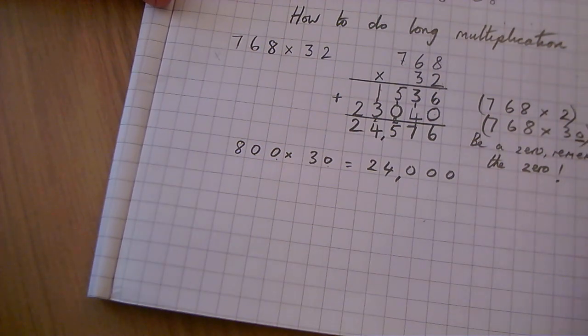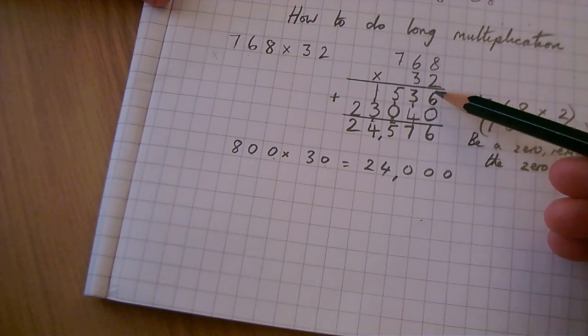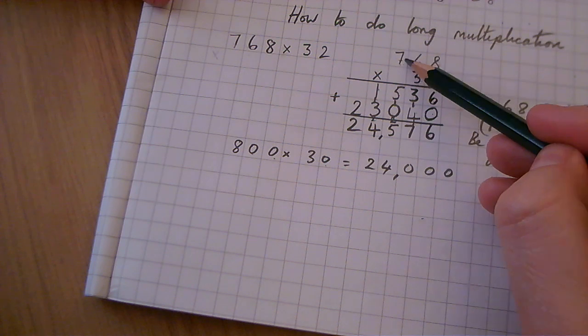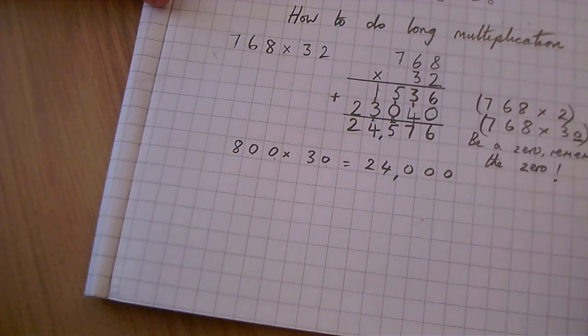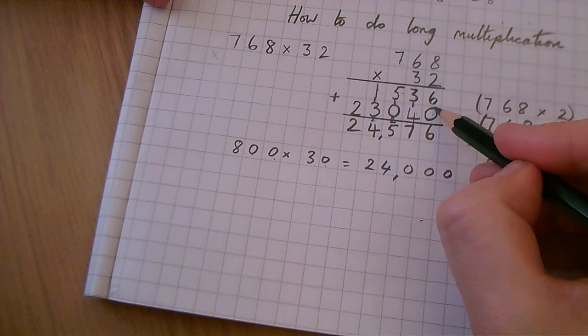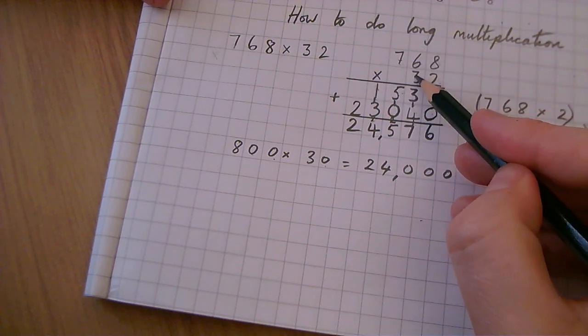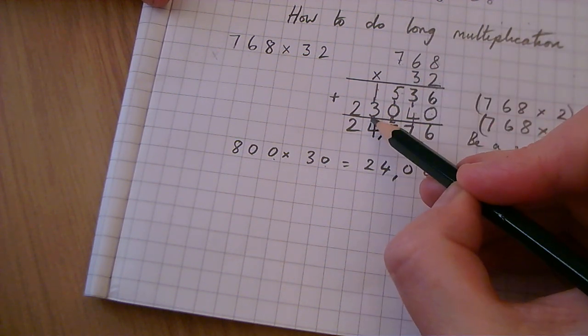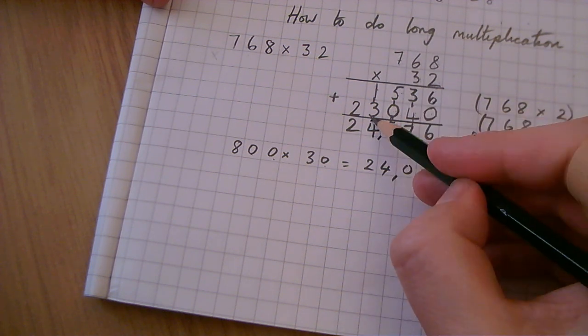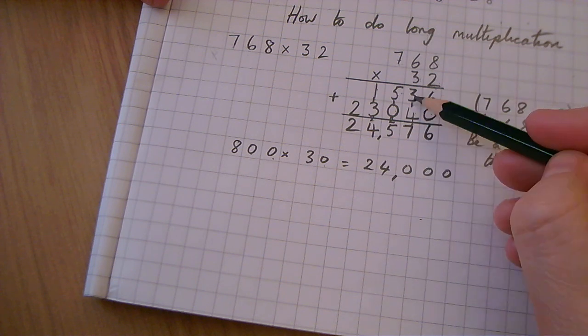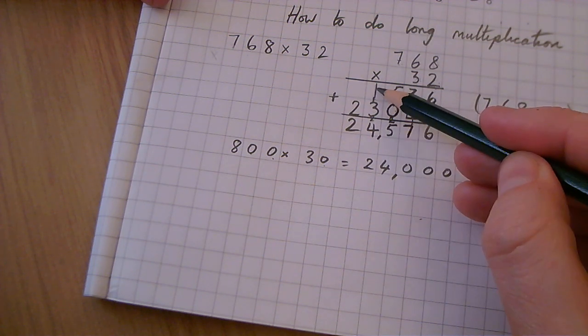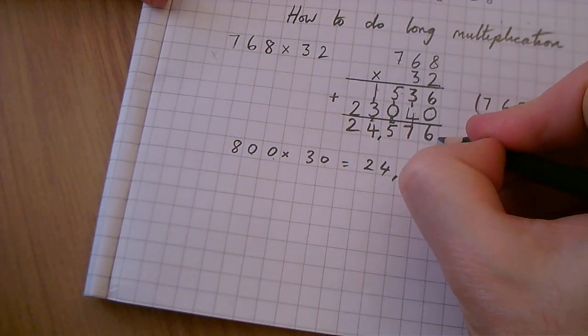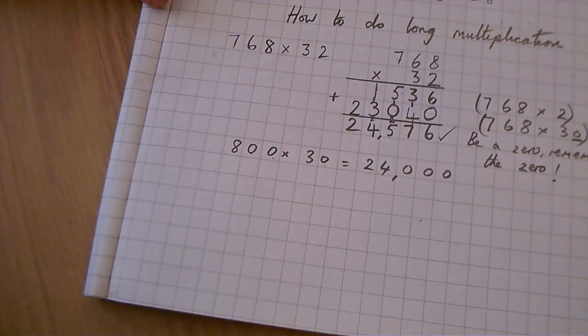However, I'm just going to go through it one more time. 2 times 8 is 16. 2 times 6 is 12, add the 1 is 13. 2 times 7 is 14, add the 1 is 15. Put the 1 in there. Be a hero, remember the 0. 3 times 8 is 24. 3 times 6 is 18, add the 2 is 20. 3 times 7 is 21, add the 2 is 23. 6, 7, 5, 4 and 2. 24,576. I'm happy that that's the right answer.